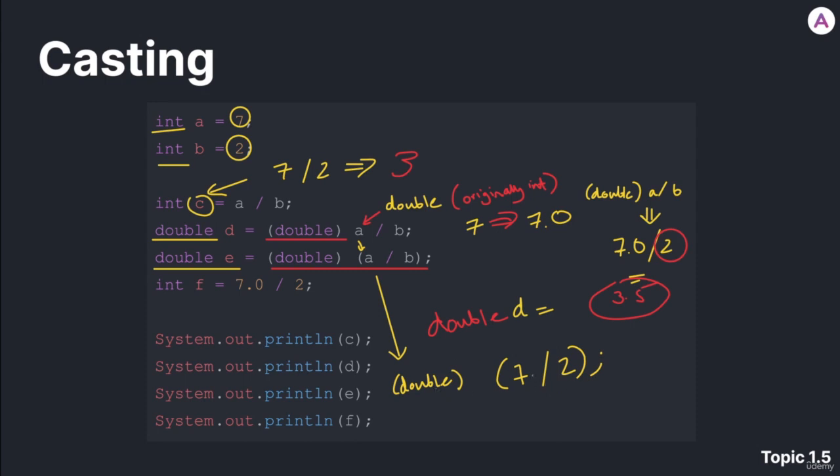These parentheses has given the division precedence over the casting. So if we were to do this, it would be attempting to cast the output of this, which would be 3, because it's still integer division. It's inside parentheses, so the division goes first. The answer is 3 because both types, these are both integers.